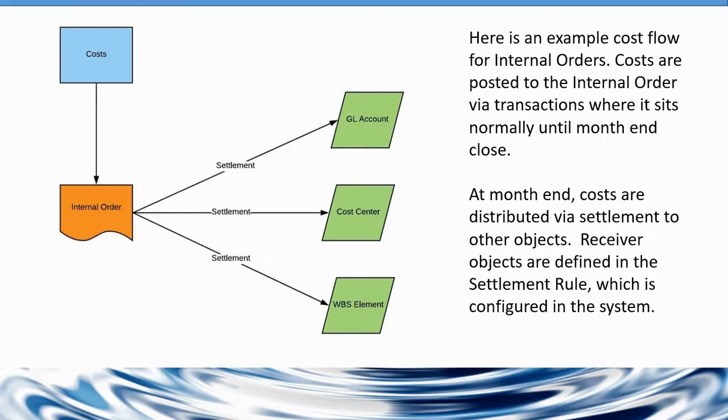Now, the internal order has different classifications. It can be a real internal order or it can be a statistical internal order. So what's the difference? A real internal order is the type of internal order that actually receives the cost. The costs are stored on this internal order.